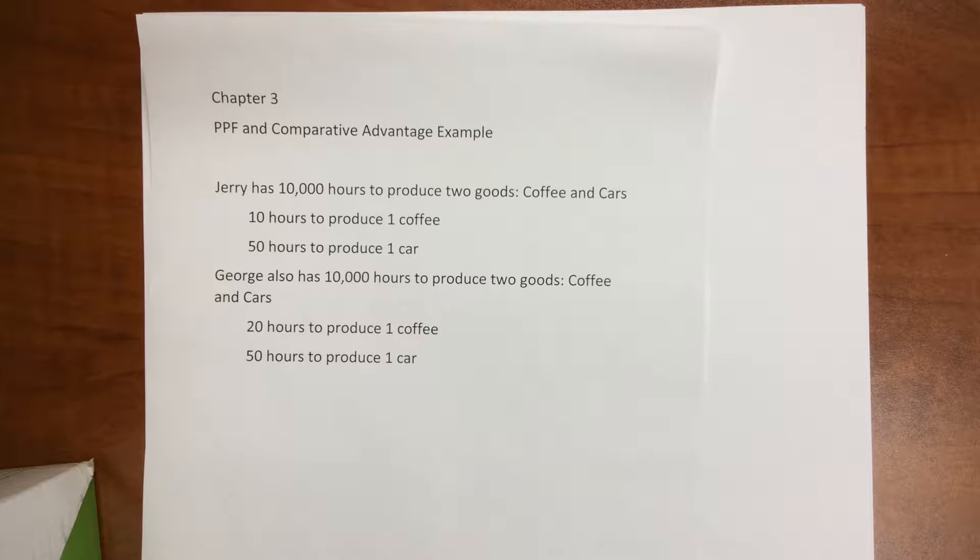All right, we have here another example coming from chapter 3. We're going to look at our PPF and comparative advantage. All right, we have an example where Jerry has 10,000 hours to produce two goods: coffee or cars. To produce one coffee requires 10 hours, and it requires 50 hours to produce one car.